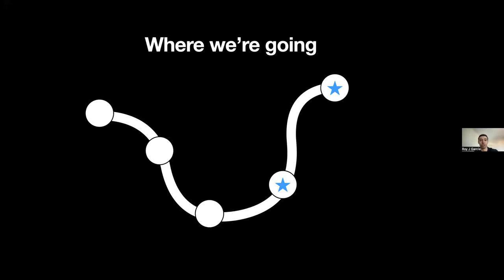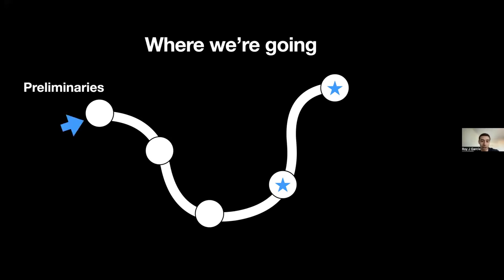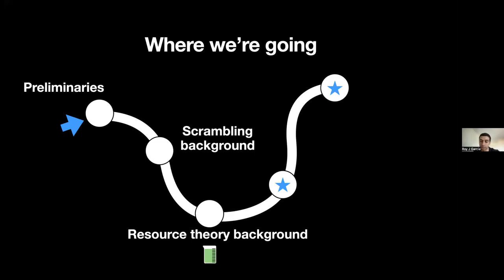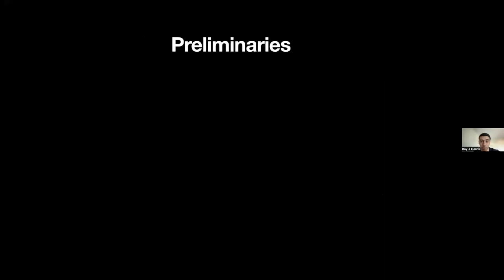We'll start off by just introducing some preliminaries, then we'll use these to give some background on quantum scrambling, and then I'll introduce something called the resource theory. At first it's not going to be clear why resource theory should have some connection to scrambling, but then we'll combine these two ideas to develop this resource theory of scrambling — our first main result. And then we're going to demonstrate some applications in quantum information protocols.